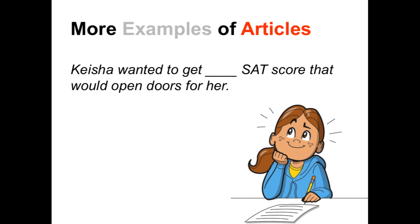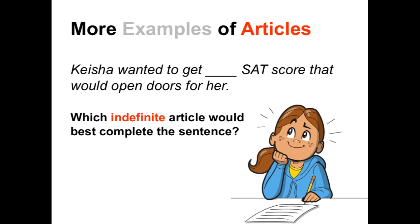And here's one more example: 'Keisha wanted to get an SAT score that would open doors for her.' Which indefinite article would best complete this sentence? Here we would use 'an' because the word SAT begins with a vowel sound. It's true that the word SAT begins with a consonant, but when the letter S is pronounced, it begins with a vowel sound: S. So we would use the indefinite article 'an' to complete this sentence.